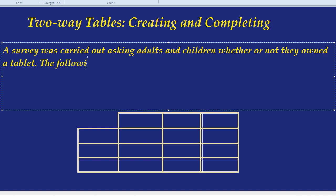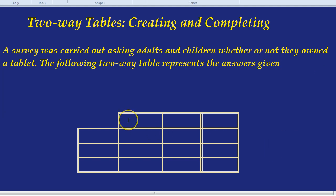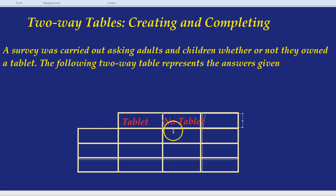The following two-way table represents the answers given. Along the top in the columns are the different answers you can give. For example, tablet was one answer and no tablet is another answer. In fact, that's the only two answers you can give. And the final column, as I said, is total.